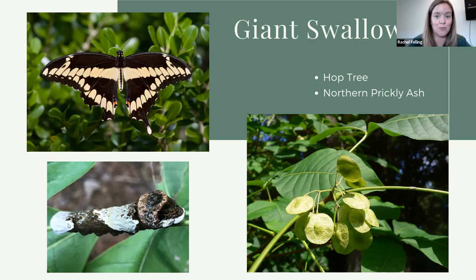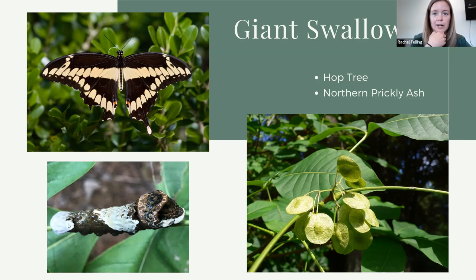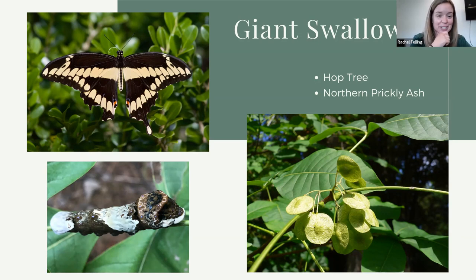If you want to plant a host for the giant swallowtail, you've got two options: a hop tree, which you occasionally see in forests here — considered a small tree or even a shrub depending on the field guide — and northern prickly ash, though I'll be honest, that's not something I've seen commonly. You've probably found those little dried out round seed pods from a hop tree falling on the ground in late summer or early fall. But I wanted to include this because the giant swallowtail is just a very impressive butterfly.